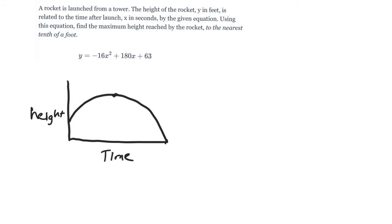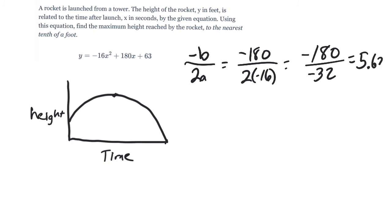To do that, you're still going to find the x value first, just like we did a second ago. Negative b over 2a, which is going to give us negative 180 over 2 times negative 16, which ends up being negative 180 over negative 32. And if I type it in on a calculator, I end up with 5.625.